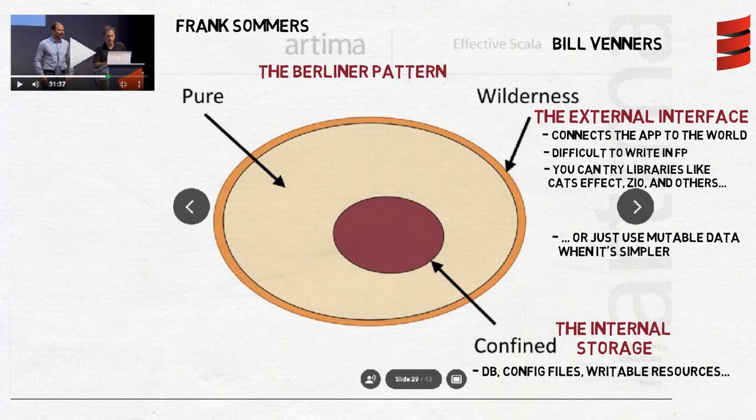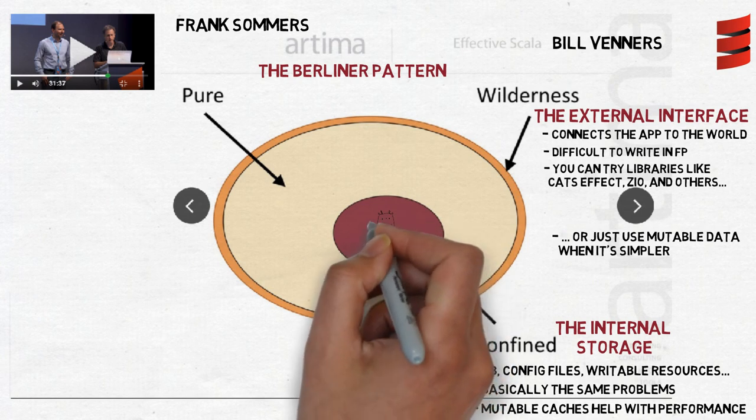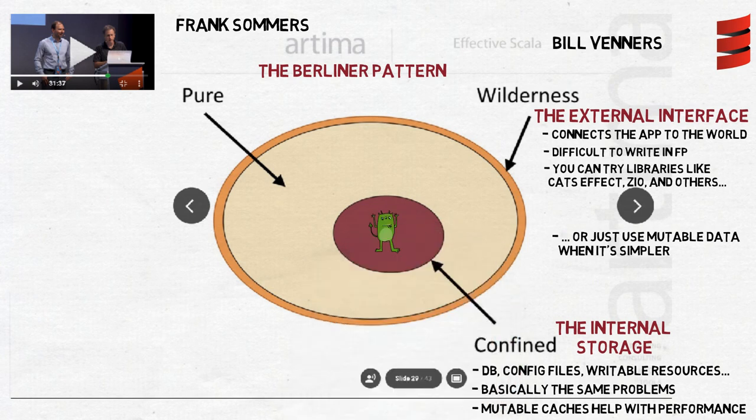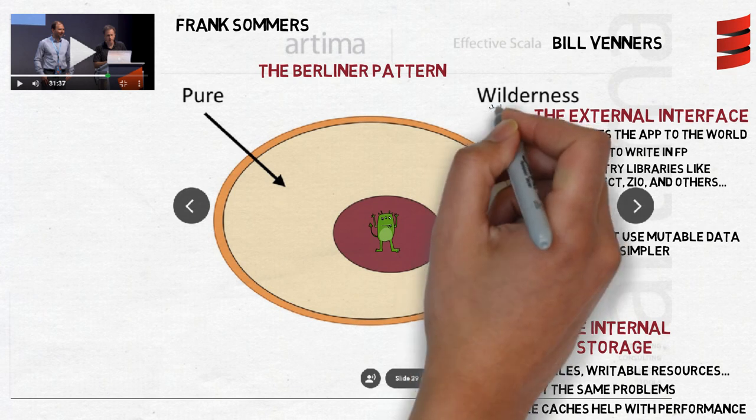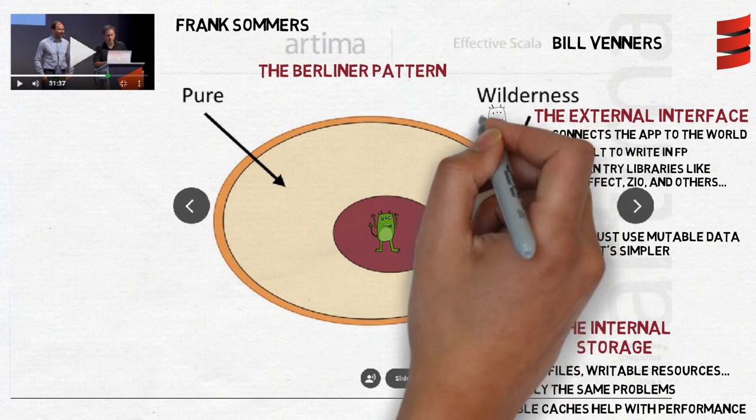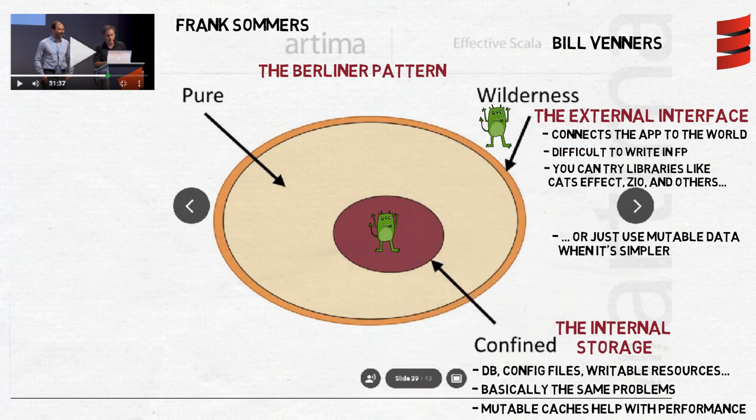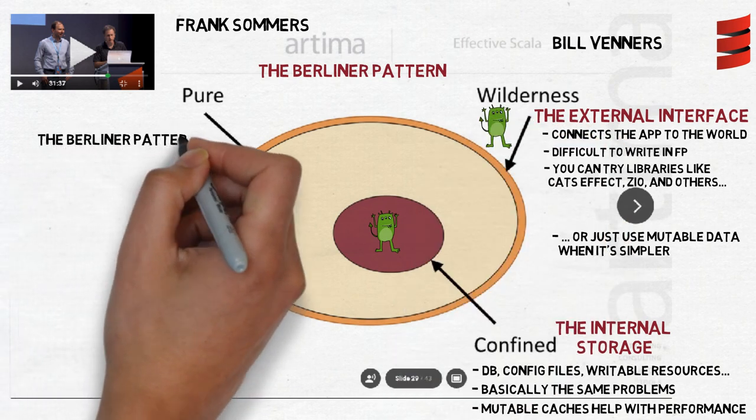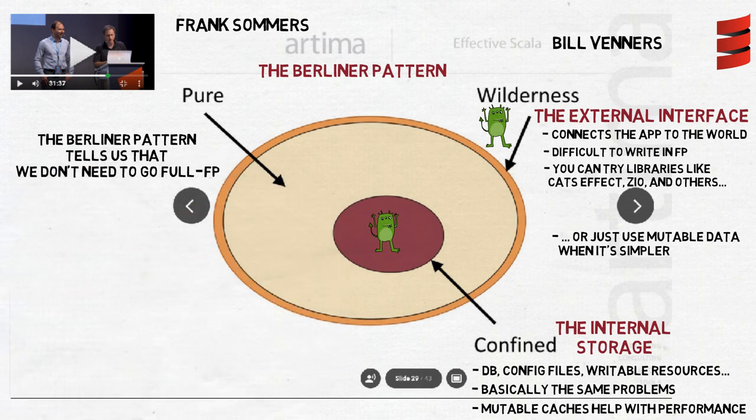Those are also not under our full jurisdiction. So we need the internal interface which lets us communicate with the operating system or the SQL server. But access to files and the database is slow, so for better performance we usually build some caches in the memory and shortcuts, which make searching quicker, and almost by definition they usually include some mutable components. Again, we may try to go full FP and sometimes it makes sense, but in other cases it's just not worth it. The Berliner pattern tells us that we don't need to go full FP.